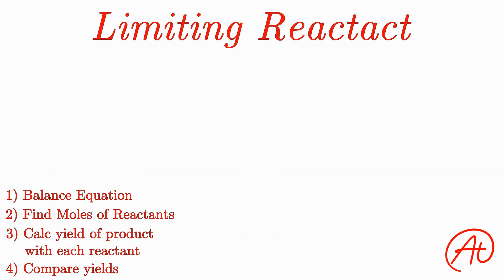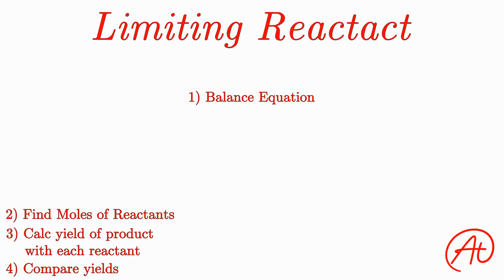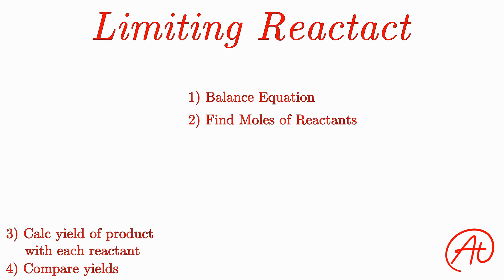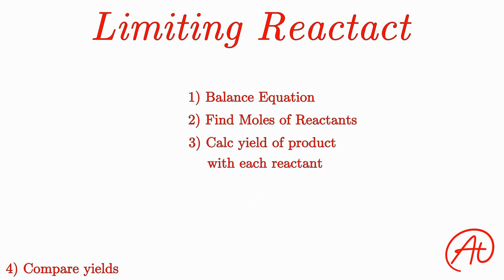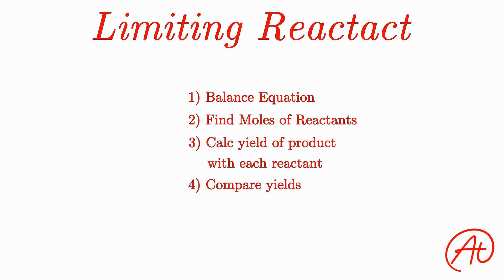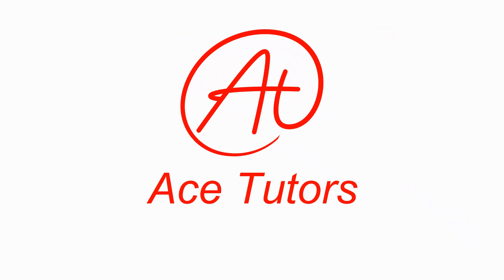So to recap, to figure out your limiting reactant: first, write out and balance your chemical equation. Then calculate how many moles of each reactant you have. Then figure out how many moles of your products you could theoretically make with each reactant. And finally, compare those values — the one with the lowest theoretical yield will be your limiting reactant. I hope you found this video helpful. We'd love to hear in the comments what you thought we did well or what we could have done better. Thanks for watching, and remember: you have big dreams — don't let a class get in the way.